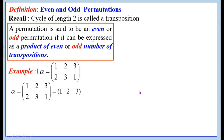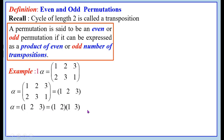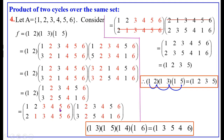Just now we learned how to write a cycle as a product of transpositions. This can be written as the product (1, 2)(1, 3). That is, alpha = (1, 2, 3) = (1, 2)(1, 3). This is what we just learned: (1, 2, 3, 5) is written as the product of transpositions (1, 2)(1, 3)(1, 5). Similarly, (1, 3, 5, 4, 6) can be written as (1, 3)(1, 5)(1, 4)(1, 6).